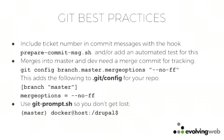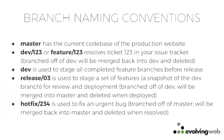Branch naming conventions: 'master' is just for production. 'dev/123' or 'feature/123' is for ticket 123. 'dev' is the develop branch — the current state of your staging site, where all completed feature branches are merged before you create a release branch. 'release/03' — or a date — is an identifier for whatever release you're testing. 'hotfix/ticket-number' is your hotfix, in a different namespace from dev branches because they're branched from a different place.